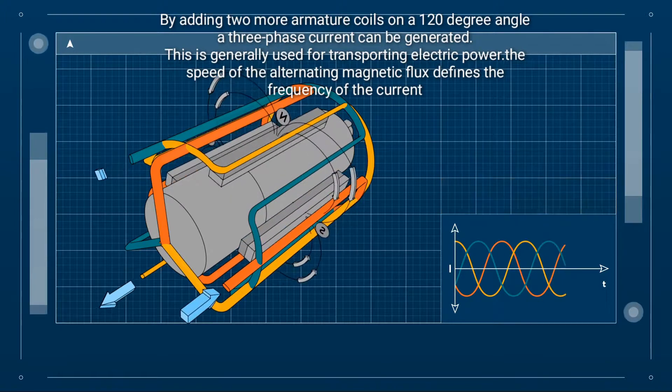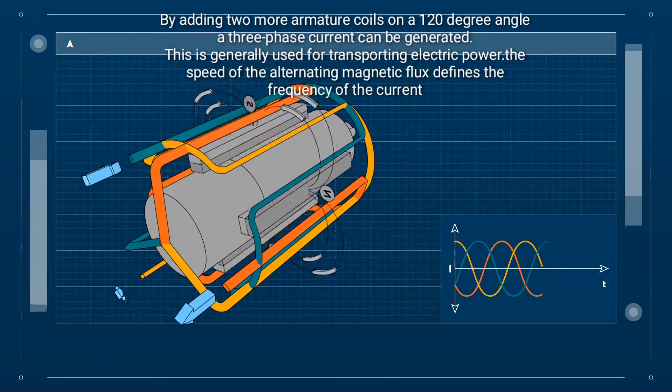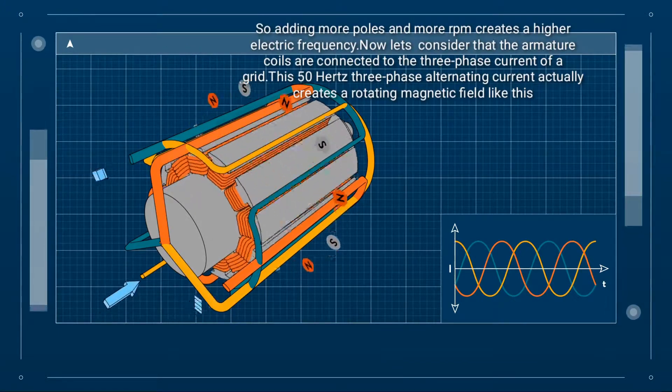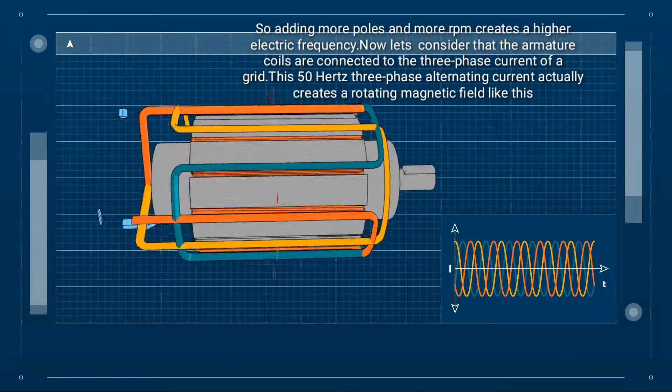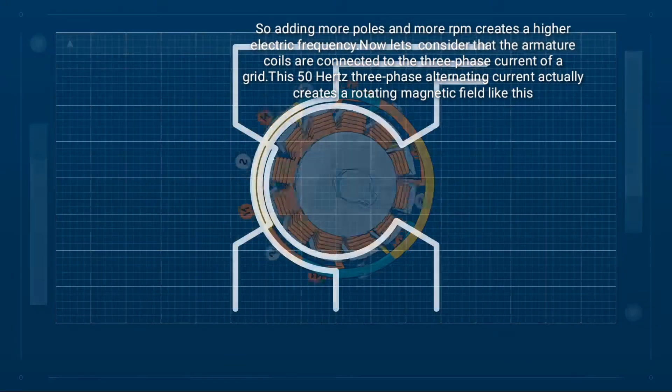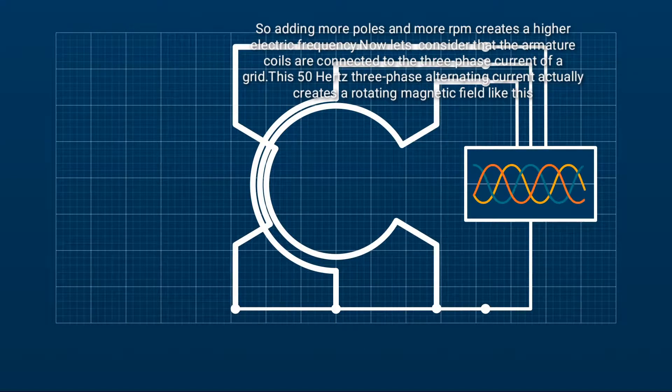The speed of the alternating magnetic flux defines the frequency of the current. So adding more poles and more RPM creates a higher electric frequency. Now let's consider that the armature coils are connected to the three phase current of a grid.